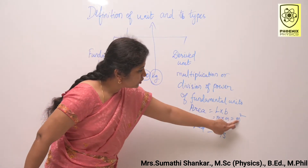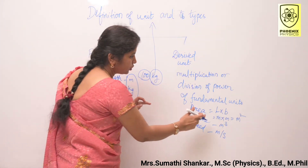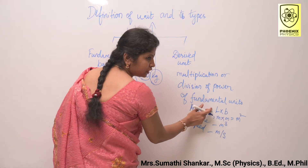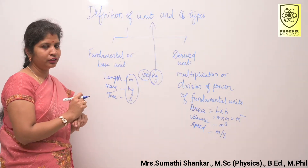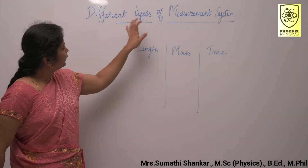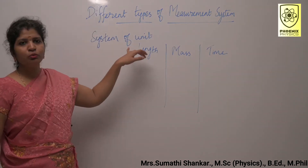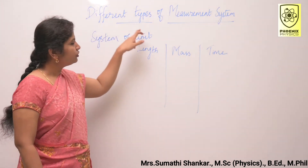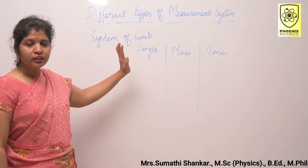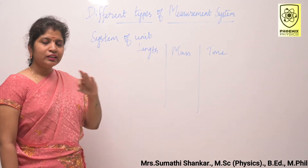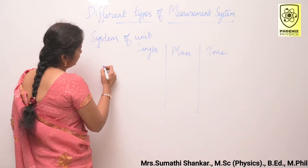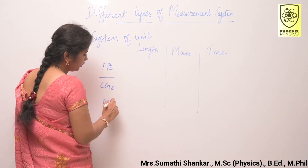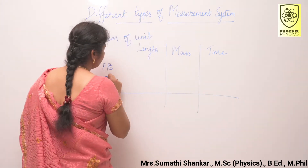Meter is the fundamental unit, so either multiplication or division of fundamental units gives derived units. Our next topic is different types of measurement systems. A complete set of units used to measure all fundamental and derived quantities is known as a system of units. There are three types: FPS, CGS, and MKS.